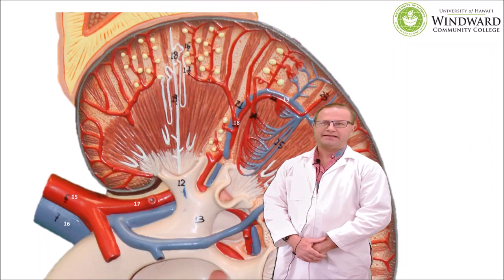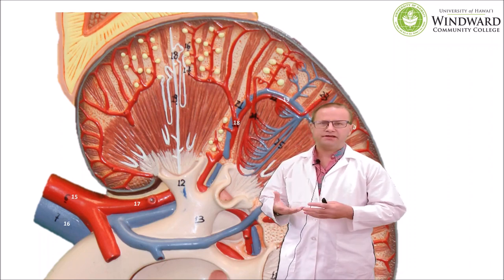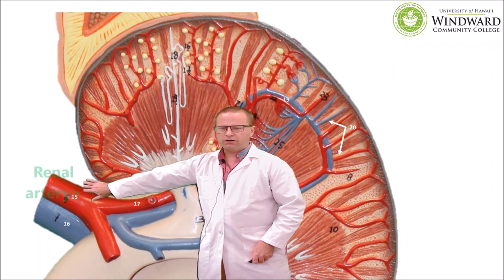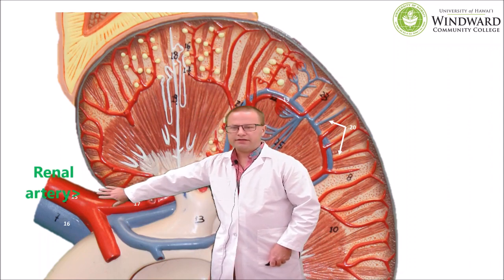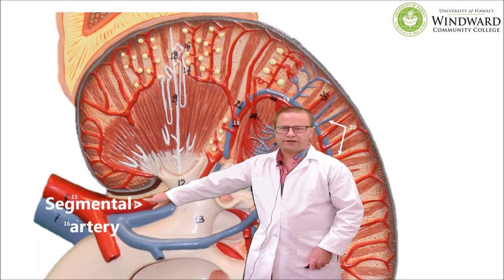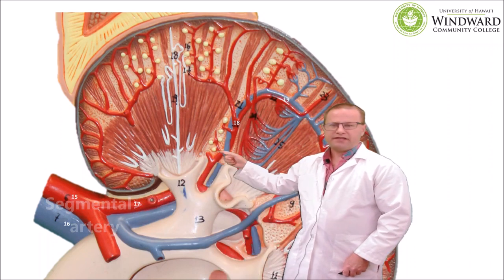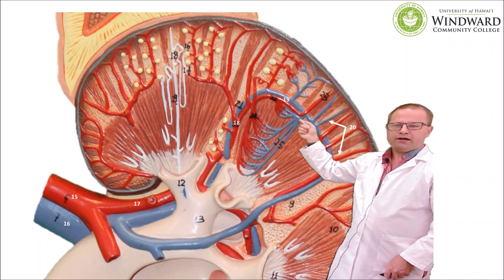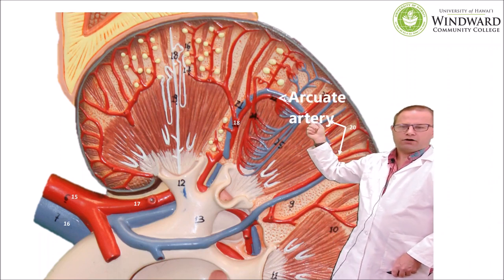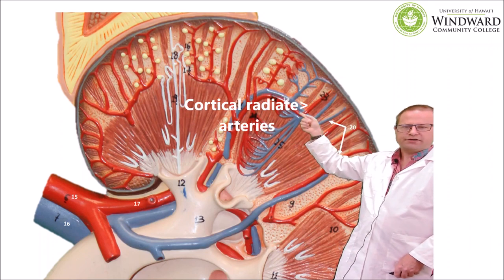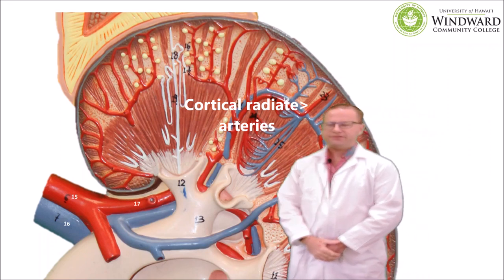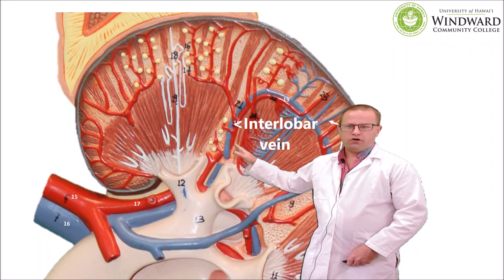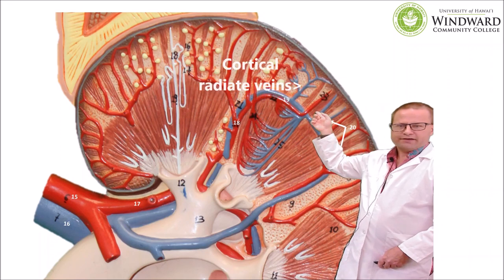Now let's talk about the vasculature of the kidney. The kidney is a very vascular organ, which is important because the kidney's primary job is to filter blood of excess water, metabolic waste, etc. We have the renal artery carrying high pressure blood into the kidney, which branches off into the segmental artery. The segmental artery then becomes the interlobar artery as it goes up between the renal lobes. That interlobar artery then arches over to become the arcuate artery, which has offshoots called cortical radiate arteries. The veins follow the same pattern: renal vein, segmental vein, interlobar veins, arcuate veins, and cortical radiate veins.